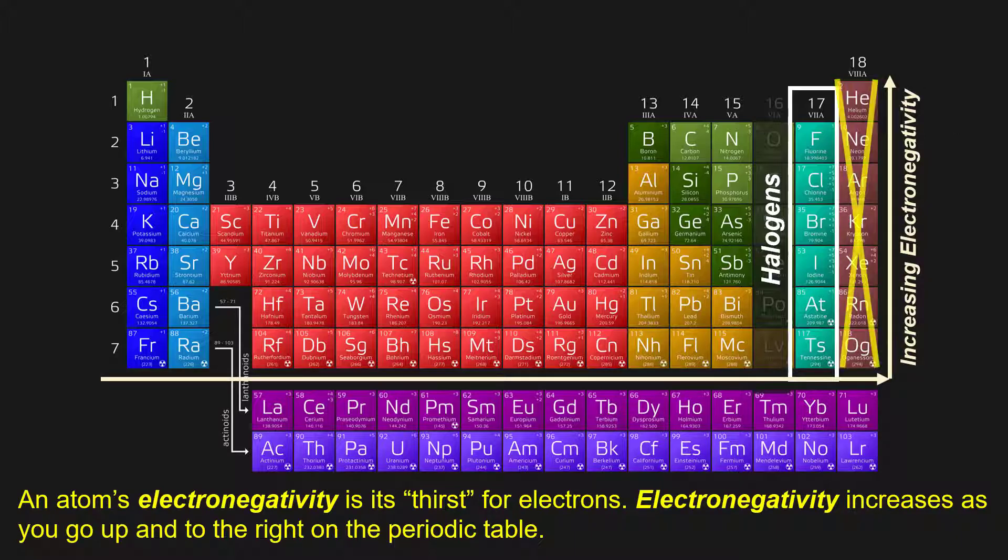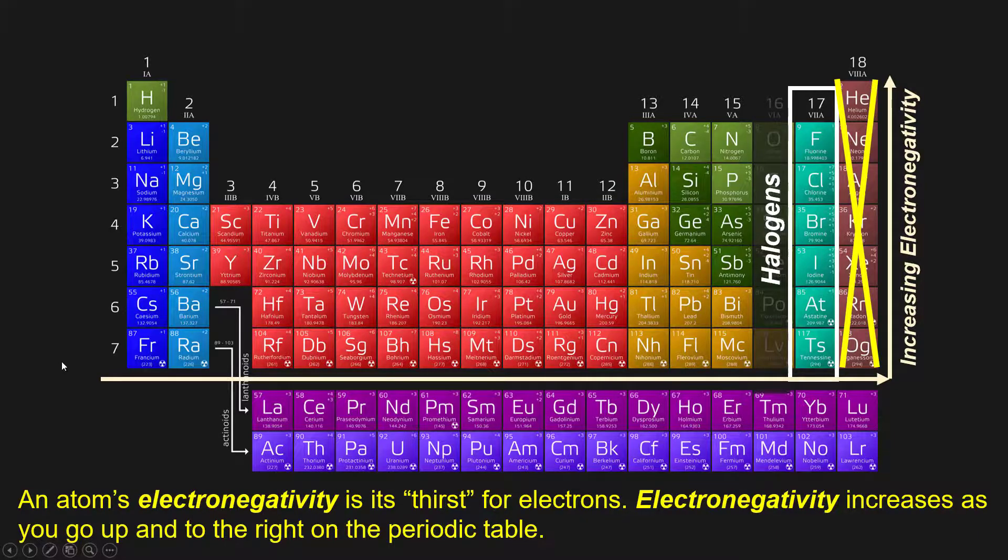We of course exclude the noble gases, because they don't want any more electrons. They're at the perfect, just right, goldilocks amount of electrons. Therefore, fluorine is the most electronegative, or most electron-thirsty element, and francium, way down here, is the least.